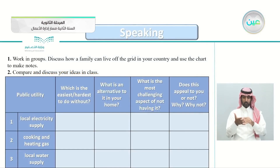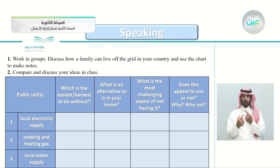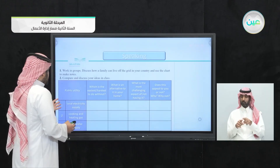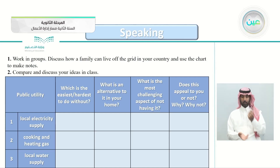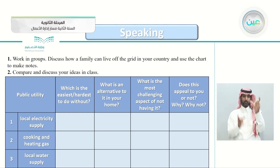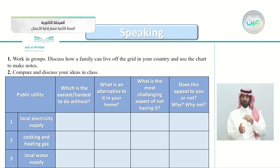Today's objective is to list information in a chart. This is the speaking lesson. Work in groups, discuss how a family can live off the grid in your country, and use the chart to make notes. Then compare and discuss your ideas in class. The chart has three public utilities: local electricity supply, cooking and heating gas, and local water supply — with four columns: easiest or hardest to do without, alternative in your home, most challenging aspect of not having it, and does this appeal to you or not and why.